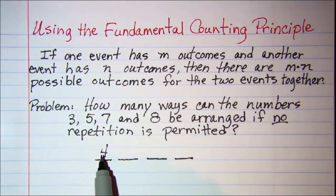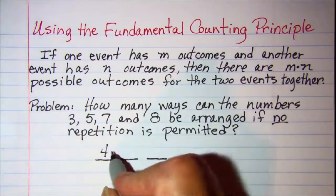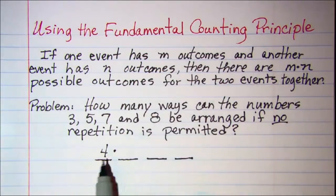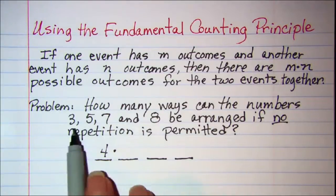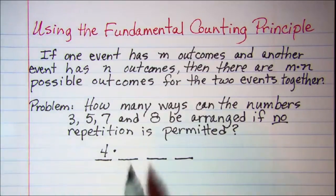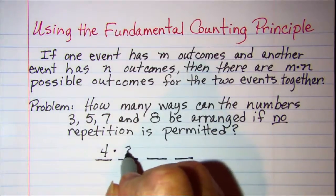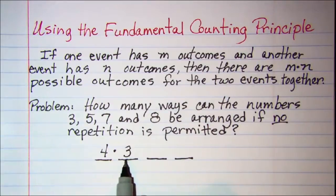And then because of the fundamental counting principle we know that we multiply that by the number of ways that I can fill in this spot. Now I've already used up one of these four numbers so now I only have three numbers left to choose from for this spot.